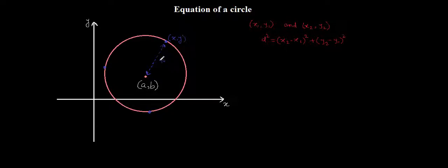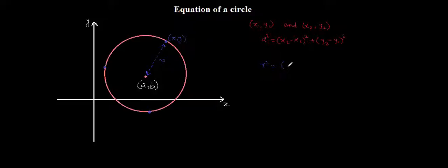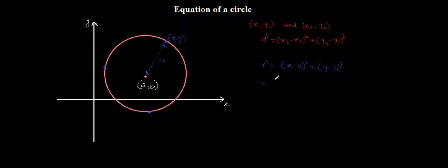I am going to write r in terms of its coordinates. r is the distance between the center and the circumference point, so r squared equals the difference between the x-coordinates squared plus the difference between the y-coordinates squared. Swapping the equation, I will write: x minus a whole square plus y minus b whole square is equal to r square.